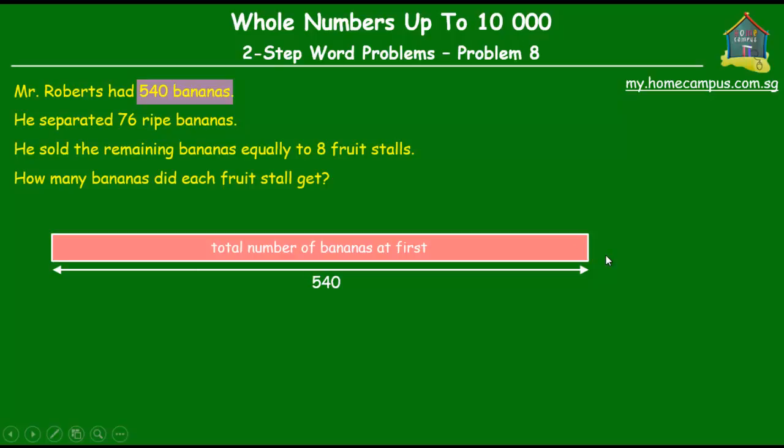Now out of these 540 bananas, he separated 76 ripe bananas. So there were some bananas that were ripe and he separated those out and that was equal to 76 bananas.